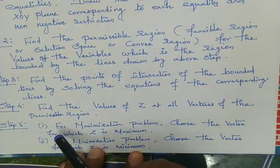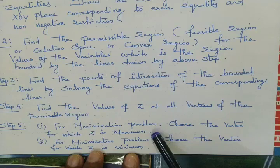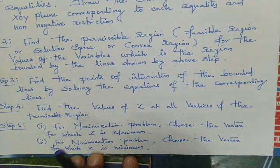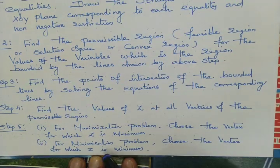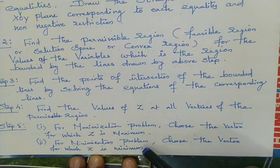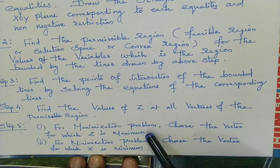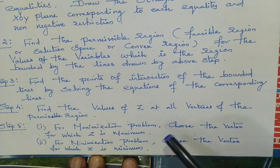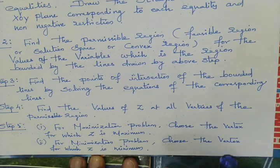Step number five: if the given problem is a maximization problem, choose the vertex for which Z is maximum. Similarly, if the objective function is minimization, choose the vertex for which Z is minimum. In that way, you find the objective function value, and the corresponding vertex which gives the maximum or minimum is taken as the value of the decision variables. By using this procedure, you solve the LPP by graphical method.